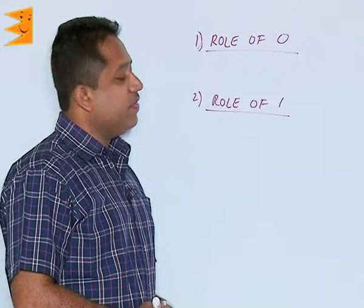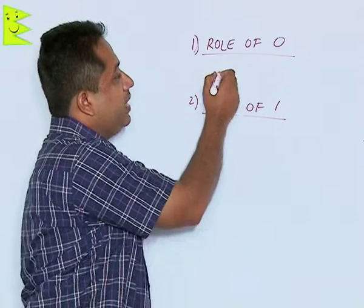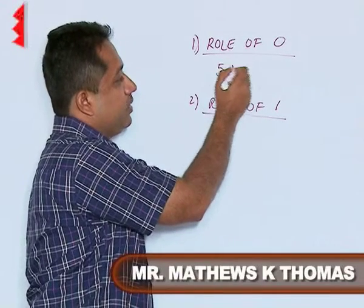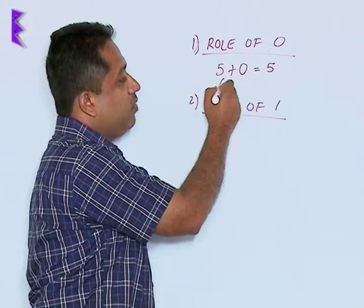Let us understand the role of 0 and the role of 1. If you see 0 and you add it to any number, we find that 5 plus 0 will give us 5, 6 plus 0 will give us 6.